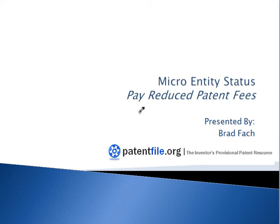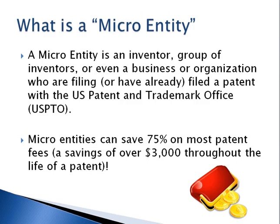This video is a quick overview of the new micro entity fee status at the U.S. Patent and Trademark Office. A micro entity can be an inventor, a group of inventors, a small company or business, and most public universities also qualify. The nice thing about being a micro entity is that you can pay reduced fees — about a 75% reduction — which may save you over $3,000 throughout the life of your patent.